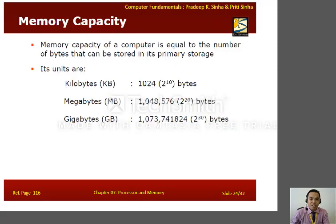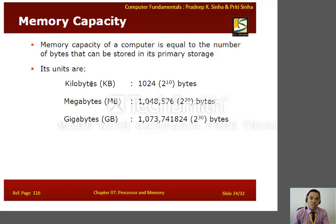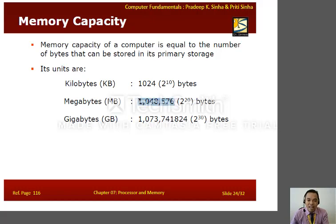The memory capacity of a computer is equal to the number of bytes that can be stored in its primary storage. Zero and one are called bits. There are 8 bits in 1 byte, and 1,024 bytes in 1 kilobyte. A megabyte and a gigabyte each have defined byte values as shown.